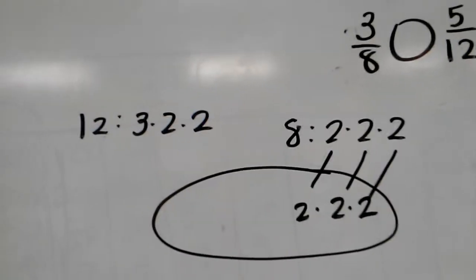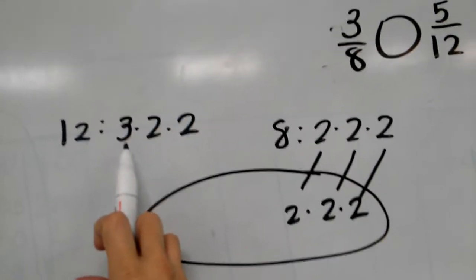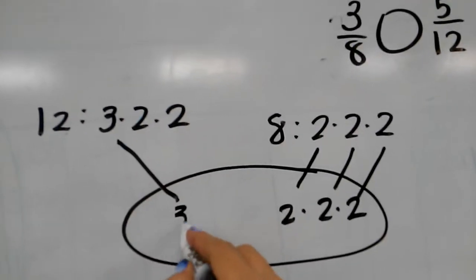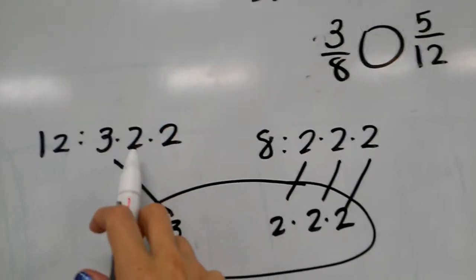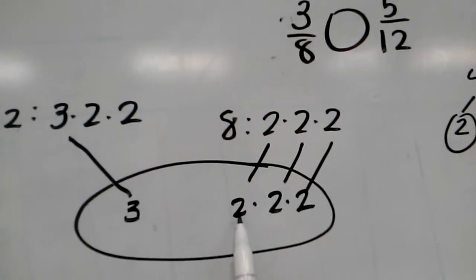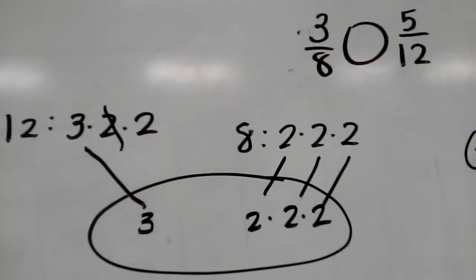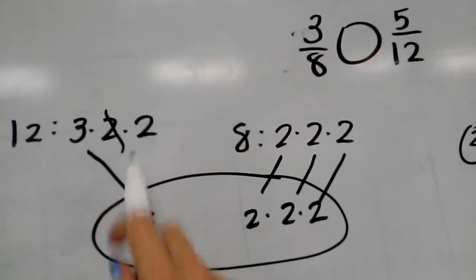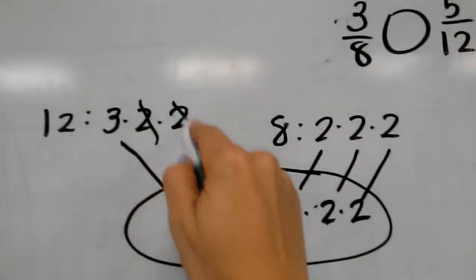Then I go to my 12 and I ask myself, do I have a first 3 in the bubble? No, I don't, so I put it in. Then I ask, do I have a first 2 in the bubble? I do, I don't put this in. Do I have a second 2? Yes, I have a second 2, I don't put this in.